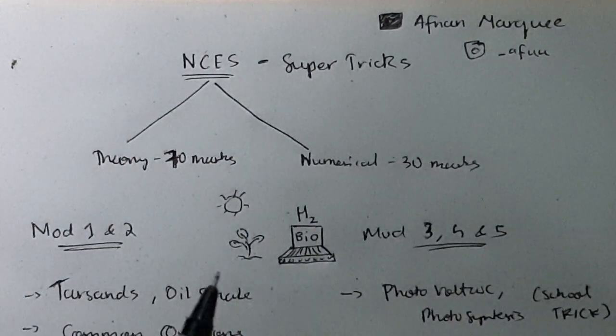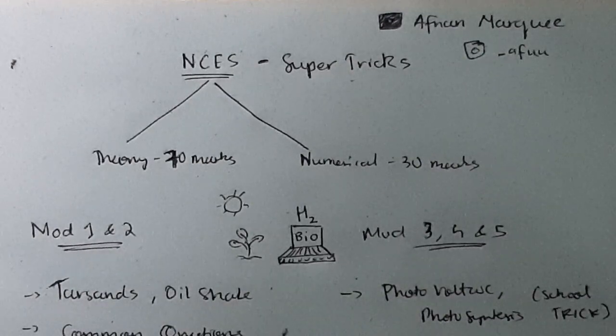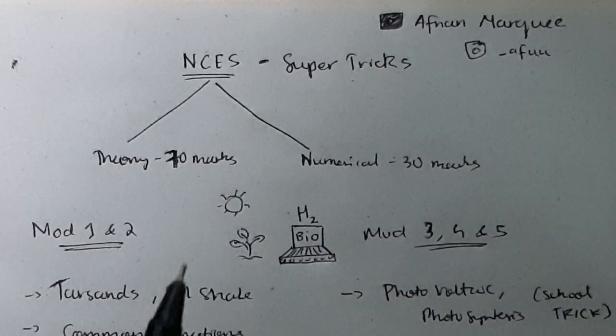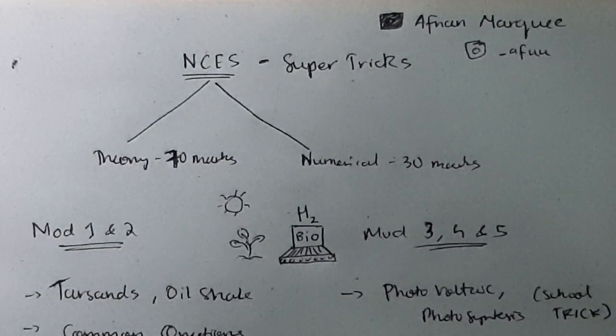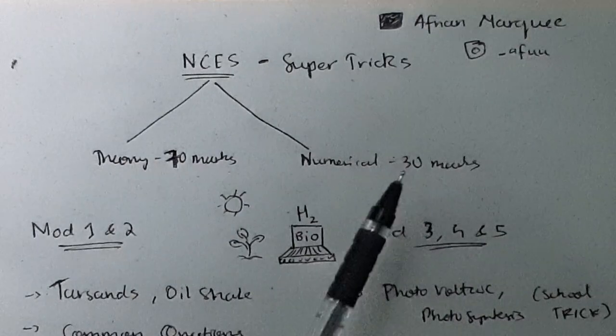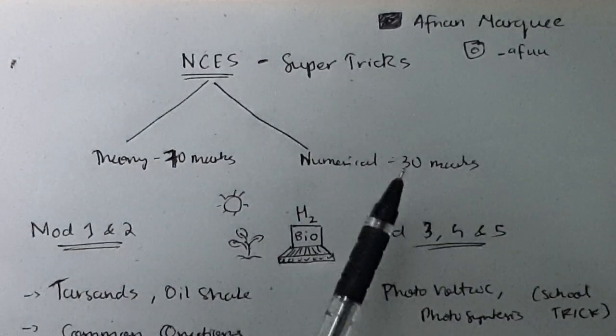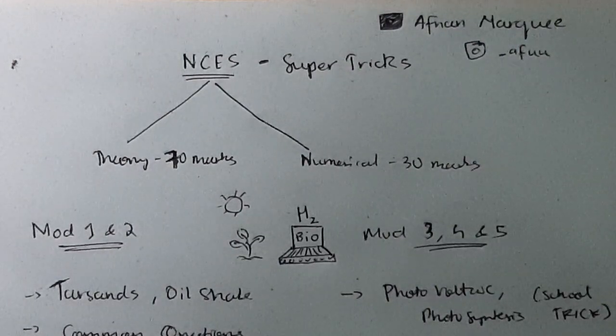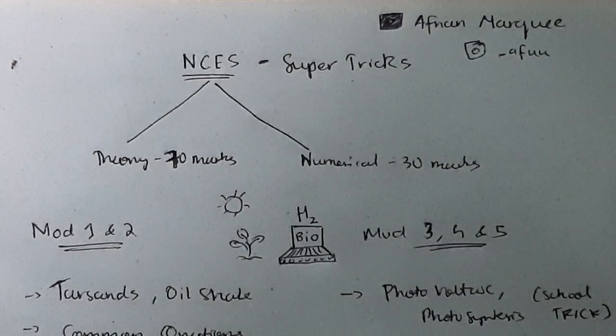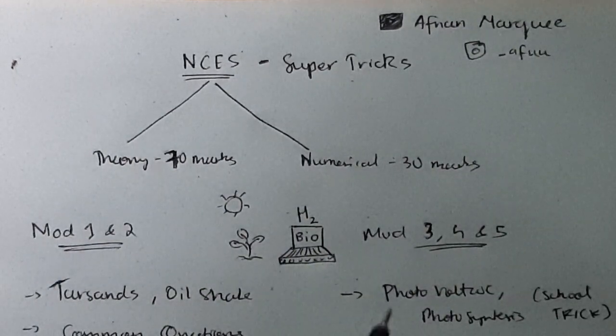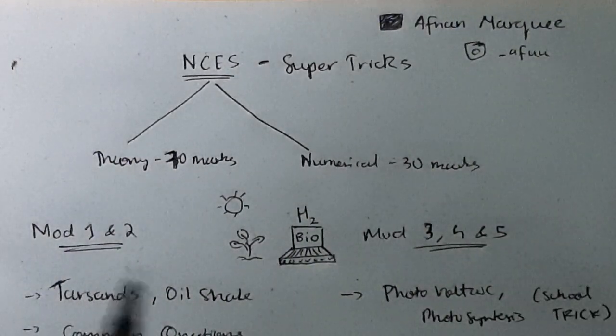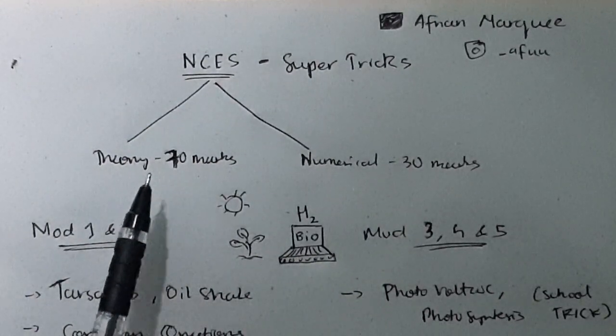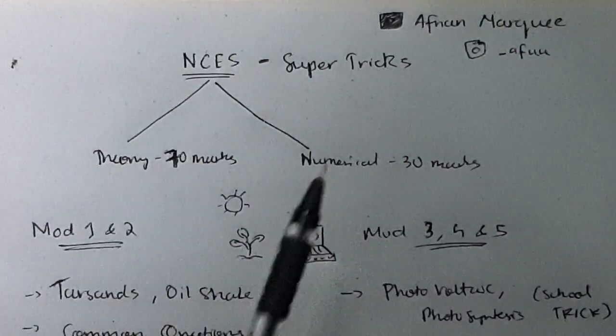I will tell you not to study numericals unless you study the whole theory full. First study the whole theory. If you get time and have confidence in yourself that you can understand the formula, remember and write in exam, then only go for this one. Otherwise, 70 marks should be the max limit for you. That's the first thing.